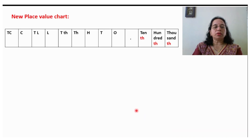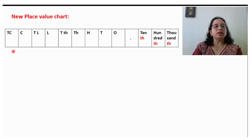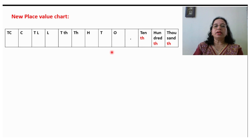So let us start with today's subtopic. My today's subtopic is the new place value chart. This word 'new' is there because the place values — ones, tens, hundreds, thousands, ten thousands, lakh, ten lakh, crore, and ten crore — we already know. Now in decimals, we add tenth, hundredth, and thousandth.